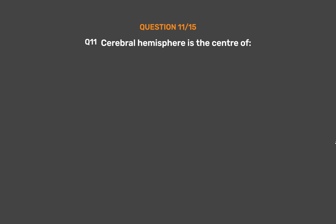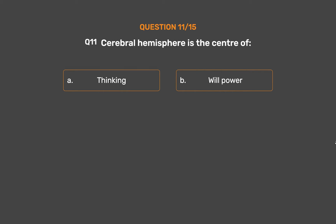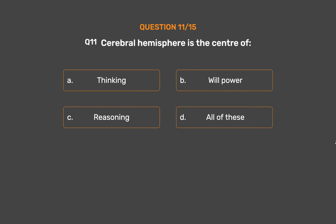Question No. 11. Cerebral hemisphere is the center of: Option A - Thinking. Option B - Willpower. Option C - Reasoning. Option D - All of these.